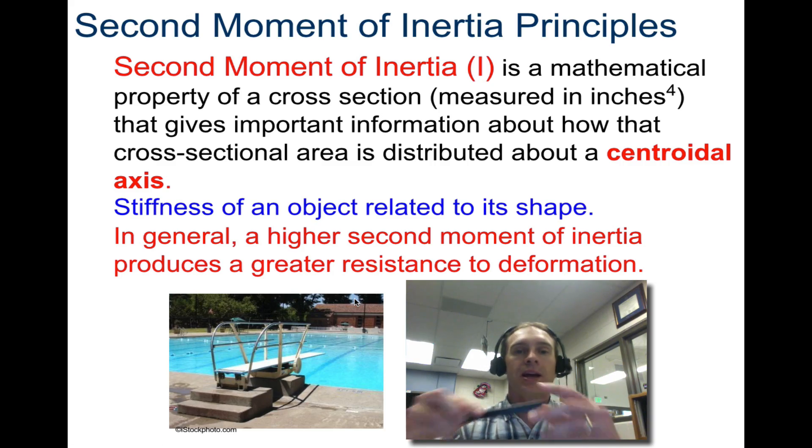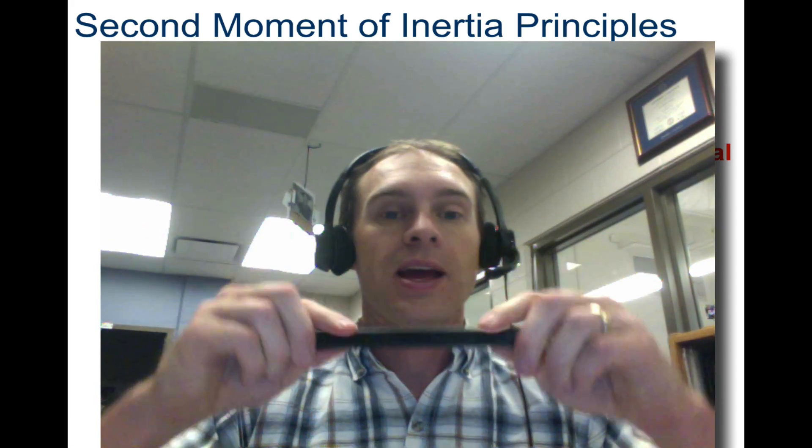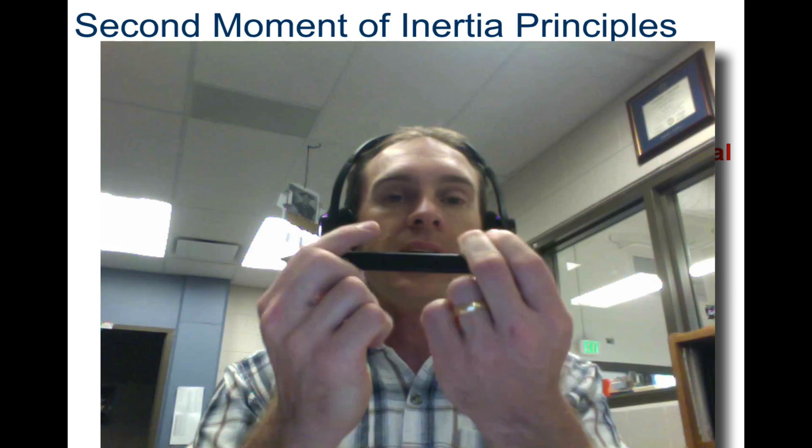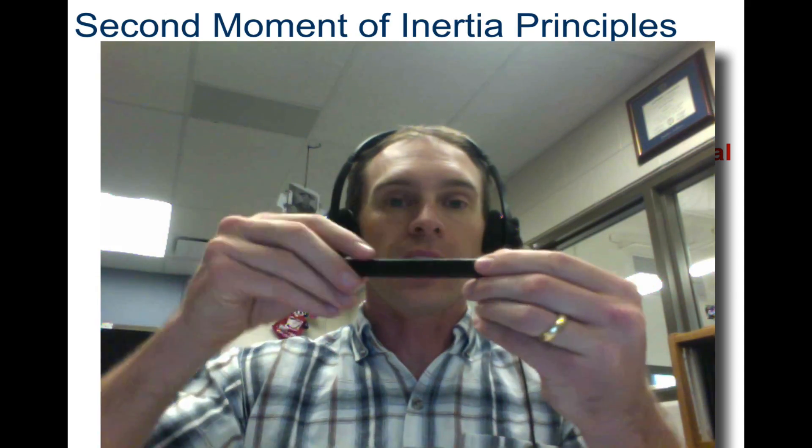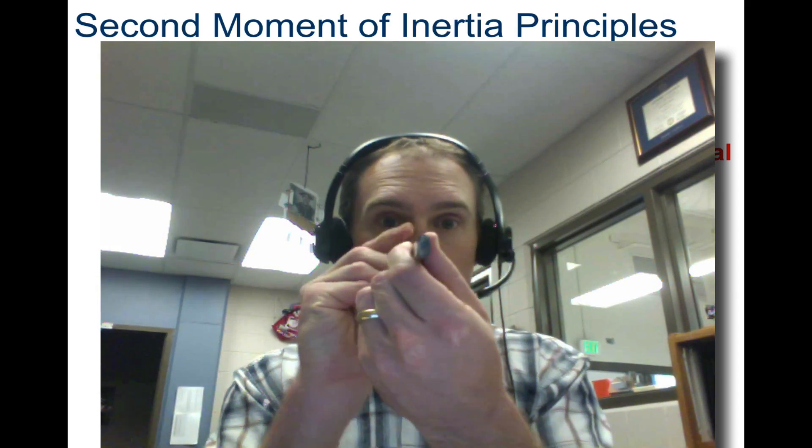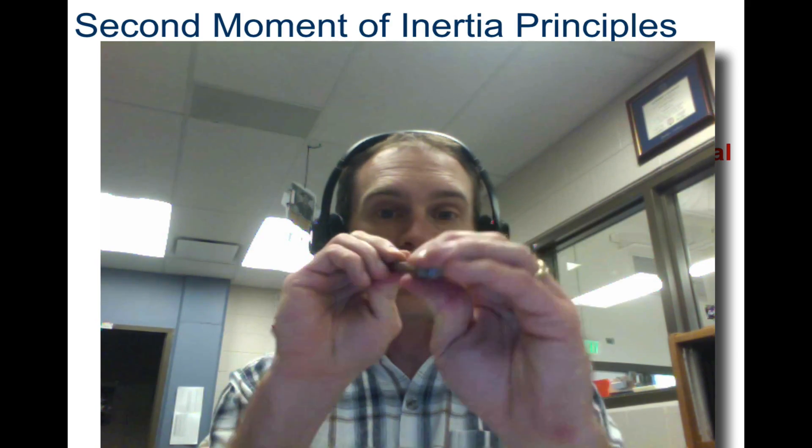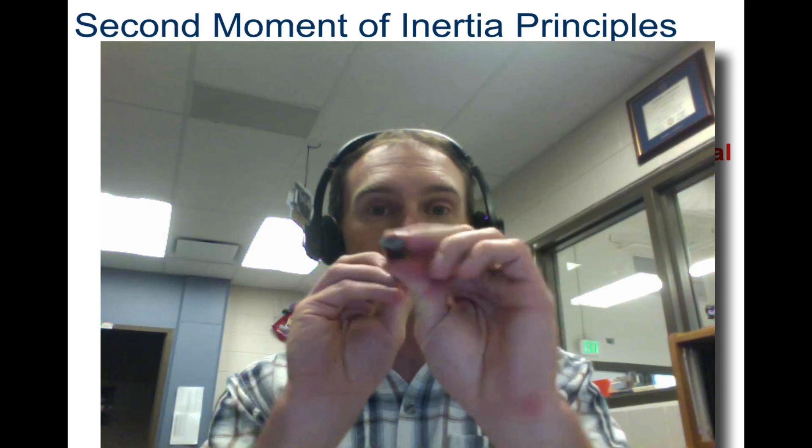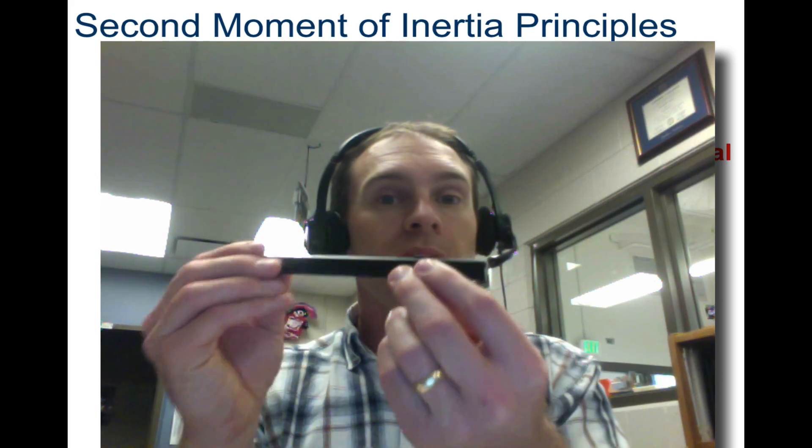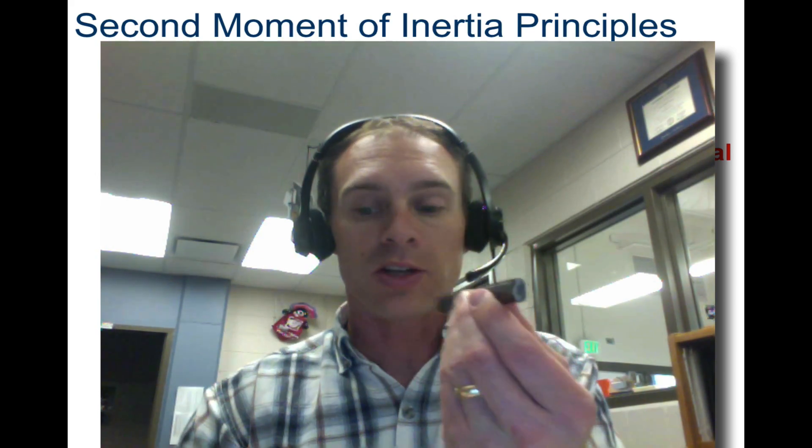If you have a pencil like this, its second moment of inertia is probably going to be bigger in this dimension along this edge here than it is in this dimension. I can probably bend it a little bit easier here. Even the orientation, you have to calculate the second moment of inertia for different orientations.